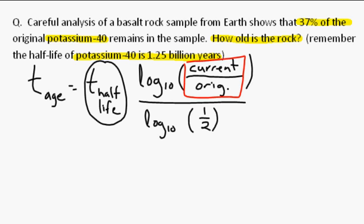Current versus original is a ratio, and often we express ratios in percents. It turns out that the 37% is that ratio. 37% remains tells us the fraction that we have now, or current, compared to the amount that we had originally.